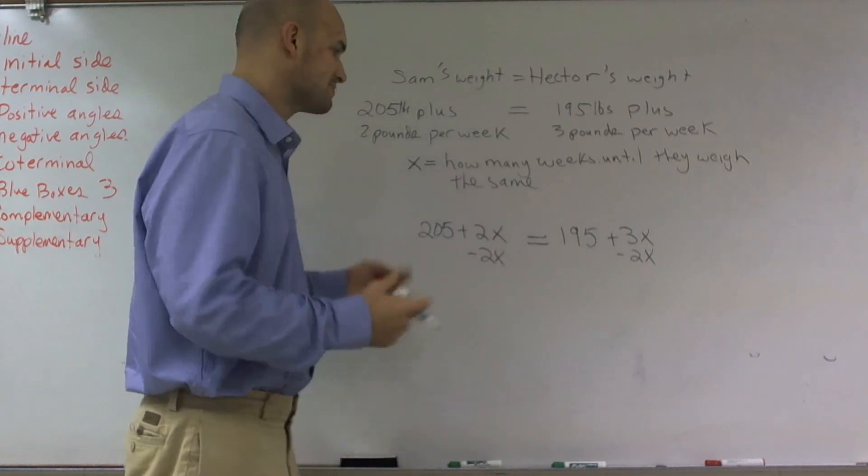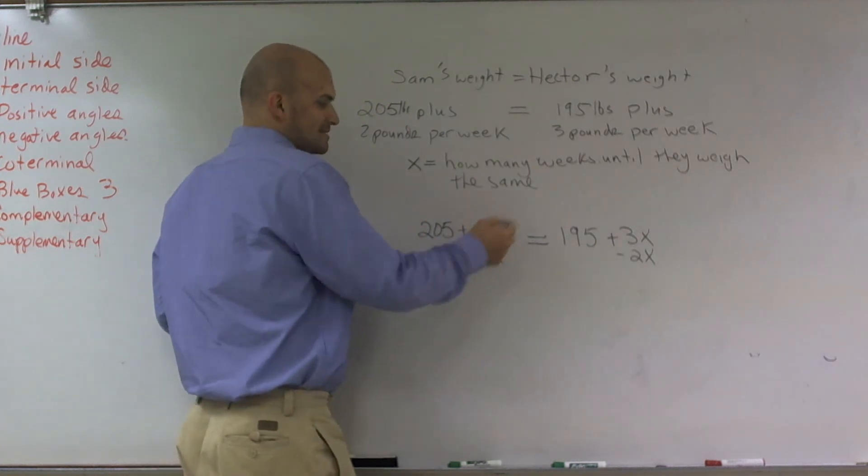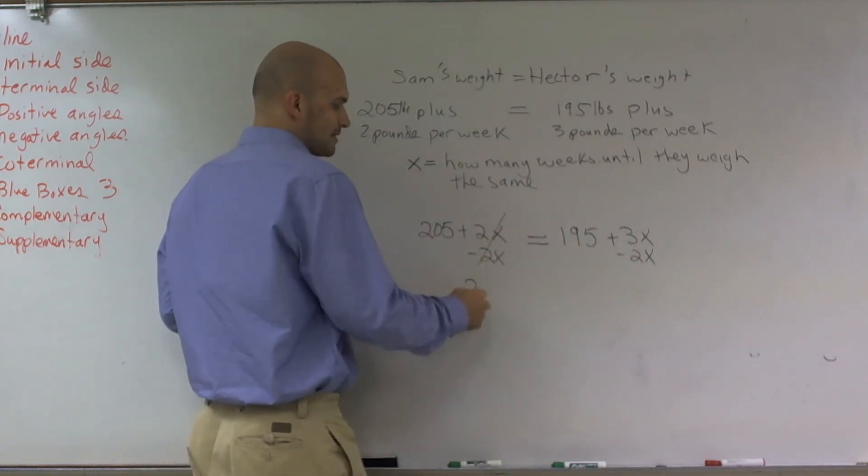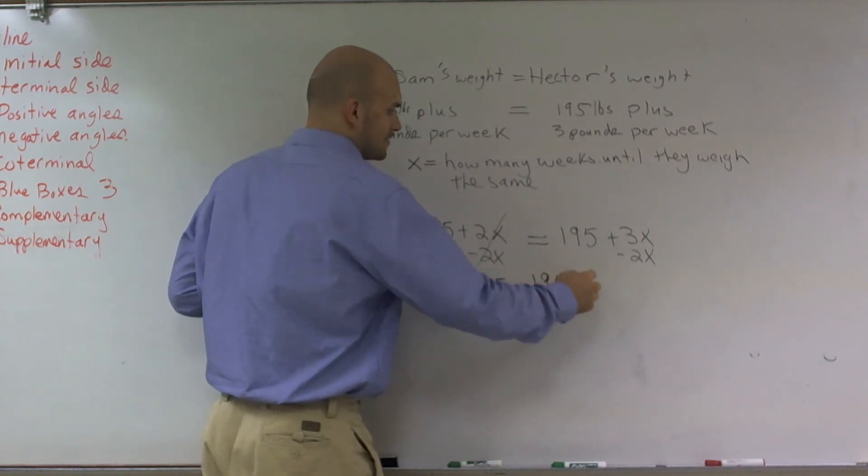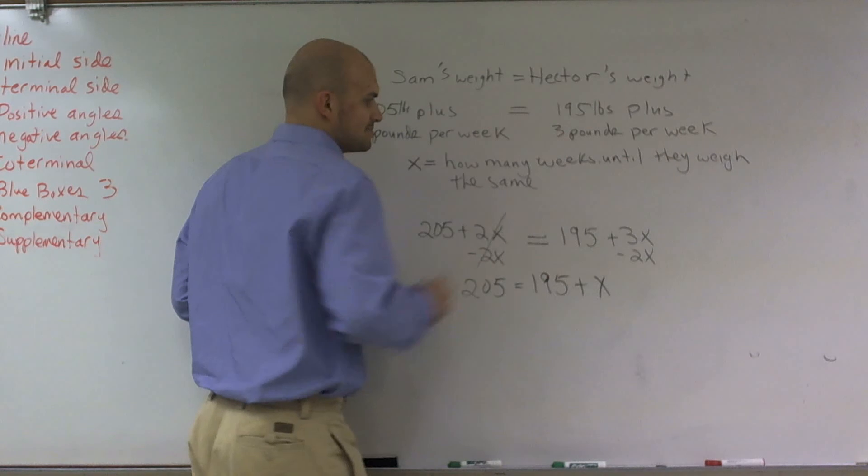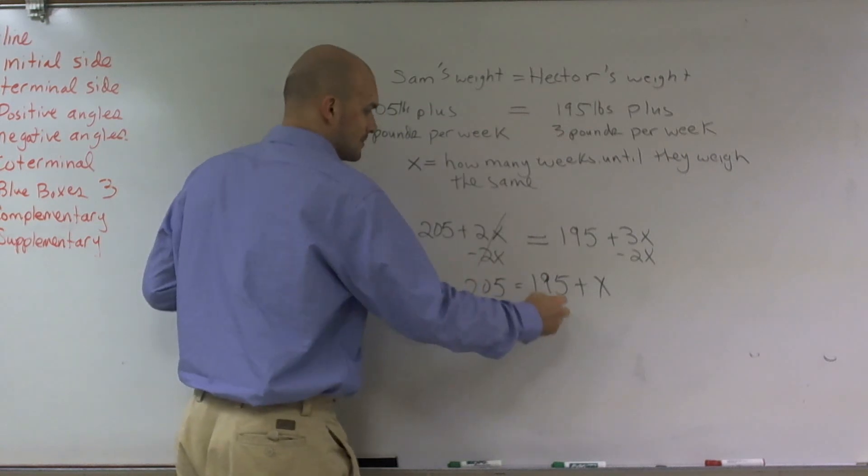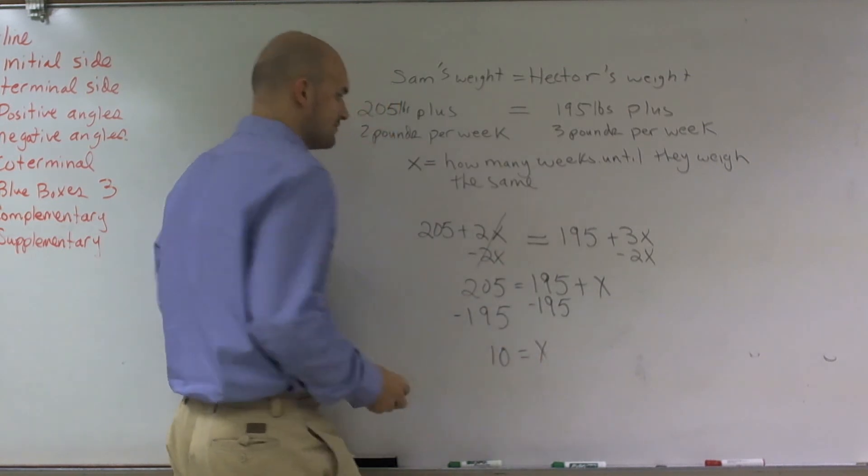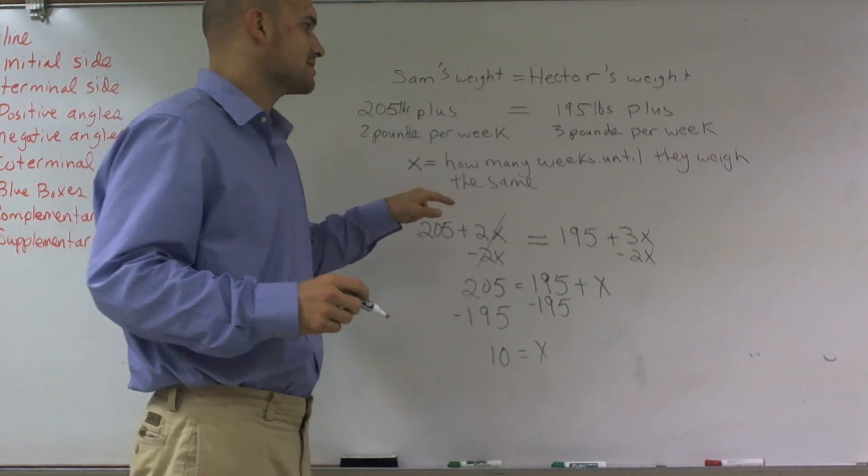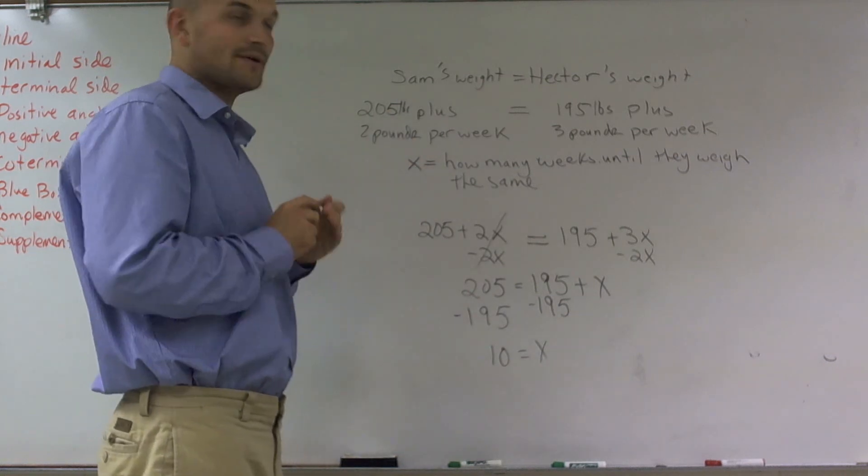So 2X minus 2X is zero, so I have 205 equals 195 plus 3X minus 2X, which is X. I subtract 195, therefore I get 10 equals X. Therefore, it's going to take 10 weeks.